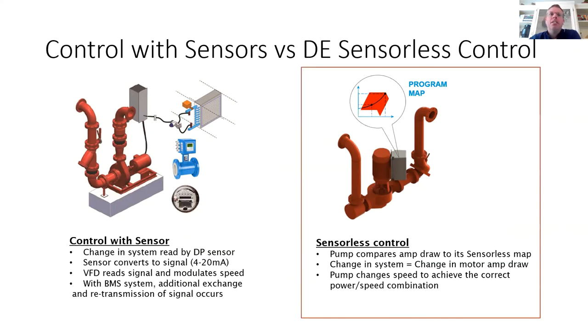In comparison, design envelope sensorless control monitors pump speed and motor amp draw, compares it to its sensorless map and control curves. As changes occur out in the system, the pump speed changes to achieve the correct power and speed combination. So the BMS system through one BACnet connection can pull in power consumption, pump speed, pump flow, pump head, status, and alarms, which can eliminate as many as four separately installed devices and takes out the guesswork as to where to install a DP sensor. So this can greatly reduce total installation costs. So if you're retrofitting an existing pumping system or designing a new pumping system, think about using Armstrong's design envelope sensorless control to help simplify things.